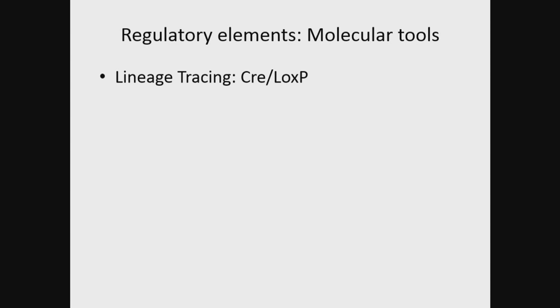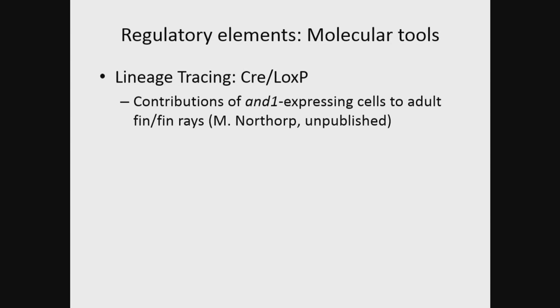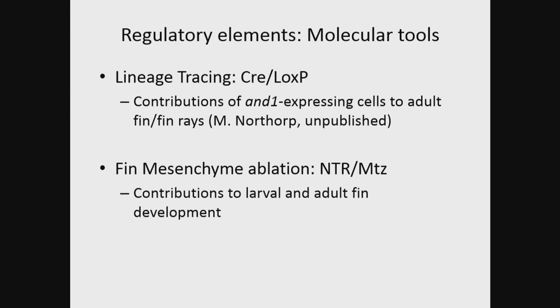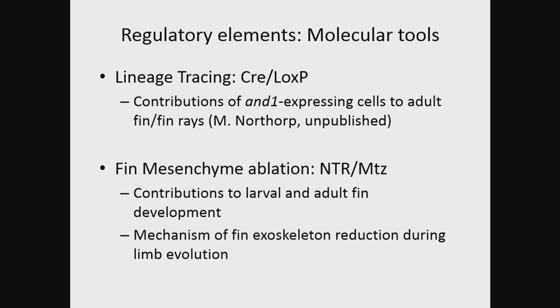Now that we have identified these regulatory elements, we can use them as molecular tools for other projects in the lab. Another student is using these elements for lineage tracing experiments using the Cre-LoxP system to identify the contributions of both ectodermal and mesenchymal cells to adult fin and fin rings—this project is ongoing. Another project of mine involves the ablation of fin-fold mesenchyme using the nitroreductase-metronidazole system. I'm interested in identifying the contributions of these cells to larval and adult fin development, while also assessing whether fin-fold mesenchyme defects are a plausible mechanism of fin exoskeleton reduction during limb evolution.